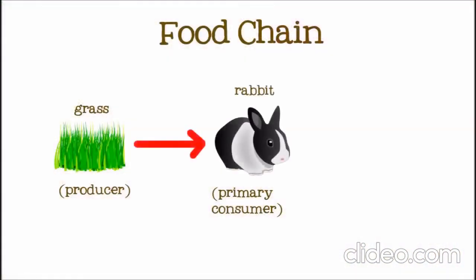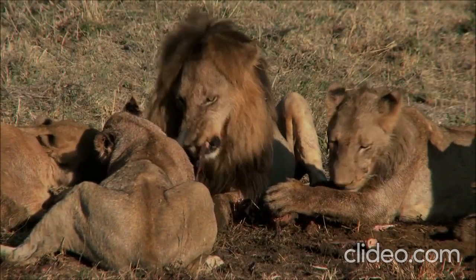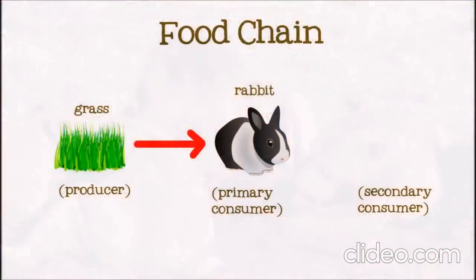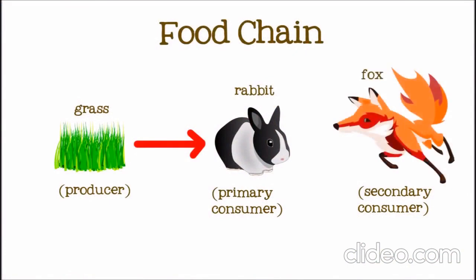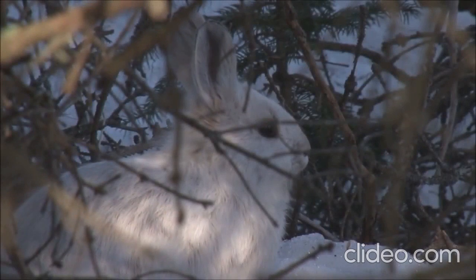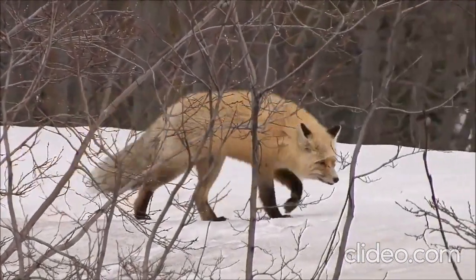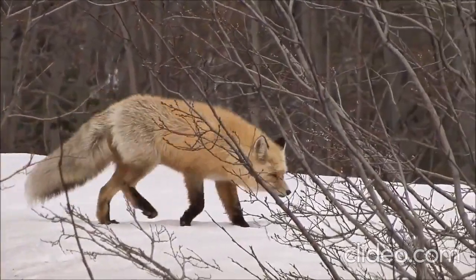Let's add a rabbit to our food chain. Next comes a secondary consumer — the second consumer in the food chain. This consumer is a carnivore and gets their energy by eating other animals. Maybe our rabbit will get eaten by a fox. When the fox eats the rabbit, part of the energy that the rabbit got from the grass is transferred to the fox. The rabbit eats the grass, then the fox eats the rabbit, and the energy that came from the sun is captured by the grass, transferred to the rabbit, and then transferred to the fox.